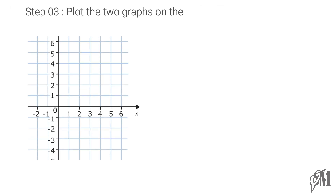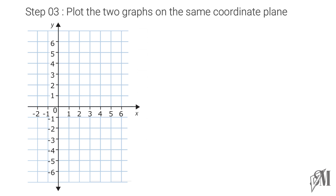Finally, plot the graph in the same coordinate plane. The graph y equals minus 3x plus 5 has the coordinates 1 comma 2, 2 comma minus 1, and 3 comma minus 4. Join the points. Then the graph y equals x minus 3 has the coordinates 1 comma minus 2, 2 comma minus 1, and 0 comma 3. Join those points as well.